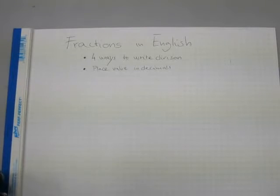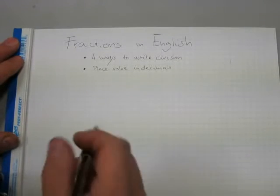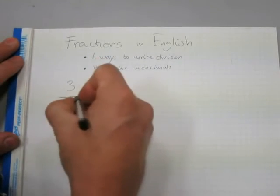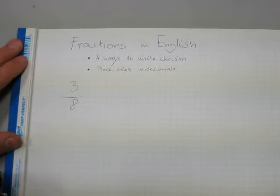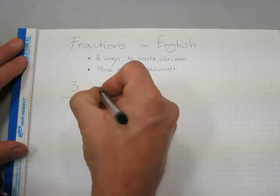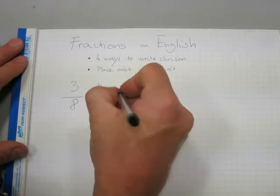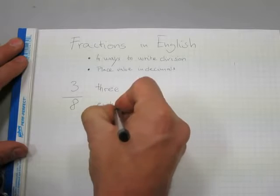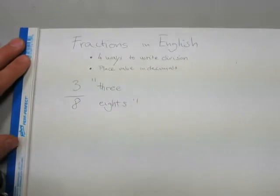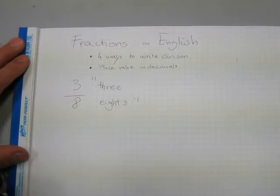So writing fractions in English is fairly straightforward. For example, there's a fraction 3/8. This is how you write fractions in English typically. You say 3 eighths. That's what you say, 3 eighths for this fraction.